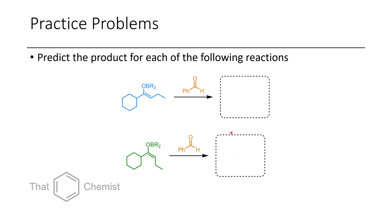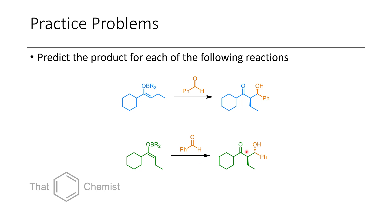Now let's look at the next problem. If we were to take these compounds and treat them with an aldehyde such as benzaldehyde, what type of product would we get? In the first case, we would get a 1,2-SYN product, and in the other case, we would get a 1,2-ANTI product. It's important to remember that even though I've drawn these as single enantiomers, these would actually be a racemic mixture of this enantiomer and its corresponding mirror image.